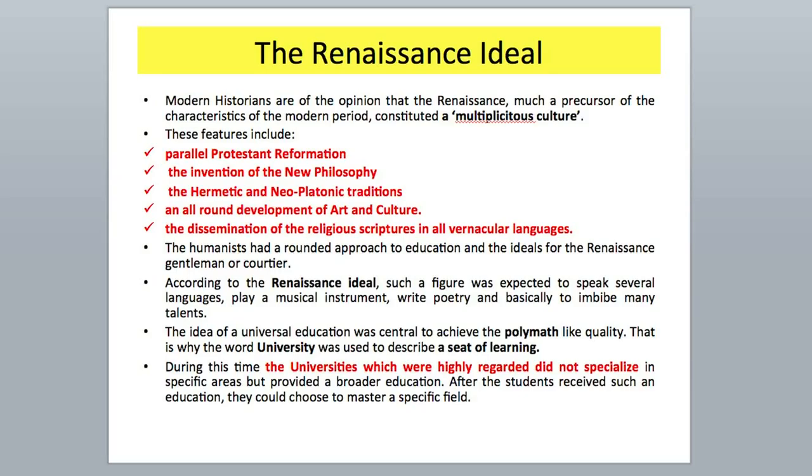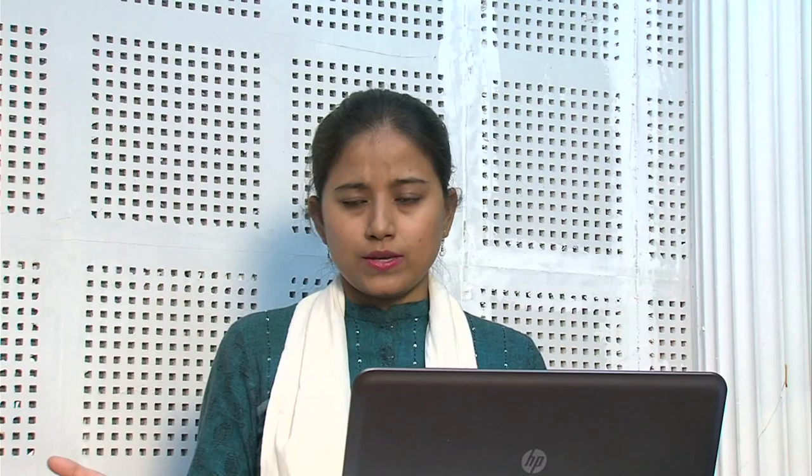People were well educated and open to learning. The systems of learning had opened up in a big way, which can also be called early modern. This brings us to the Renaissance ideal. Modern historians are of the opinion that the Renaissance, much a precursor of the characteristics of the modern period, constituted a multiplicitous culture — that is, a heterogeneous culture, multiple in its forms — where various different cultures were taking place because of the opening of knowledge and the expanding views and perceptions of man.